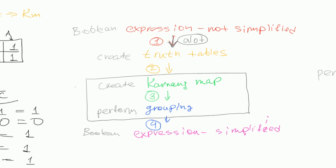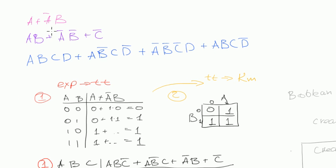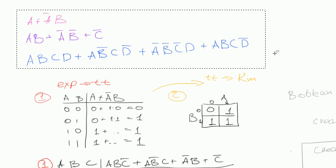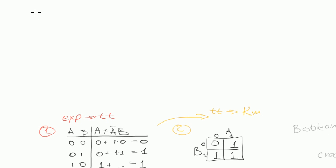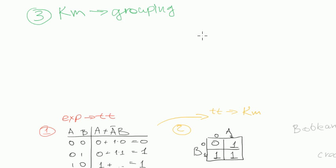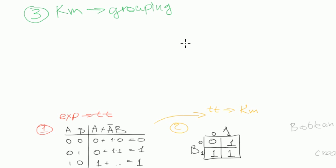Next we are going to explore grouping, or going from Karnaugh map to groups — that's Step 3. There are some rules for grouping and I will tell you what they are right now. We already have Karnaugh maps and we want to perform grouping on them. Several videos ago when I showed the first example of the Karnaugh map technique, I showed you some grouping but didn't describe the rules — that's what I'm going to do now.